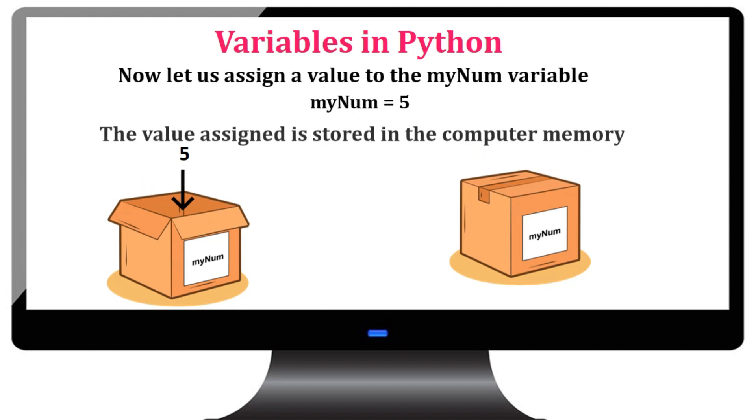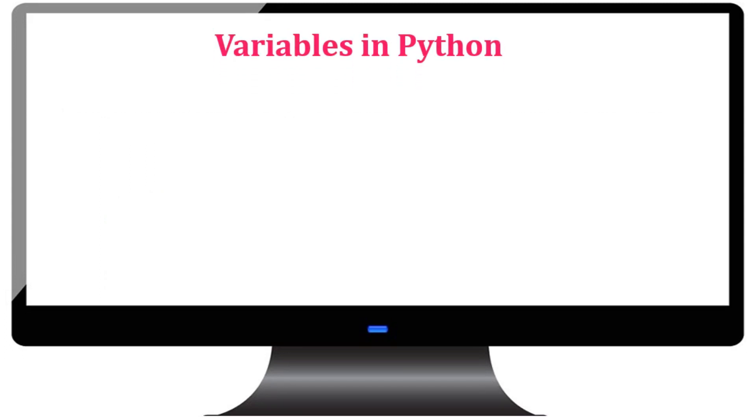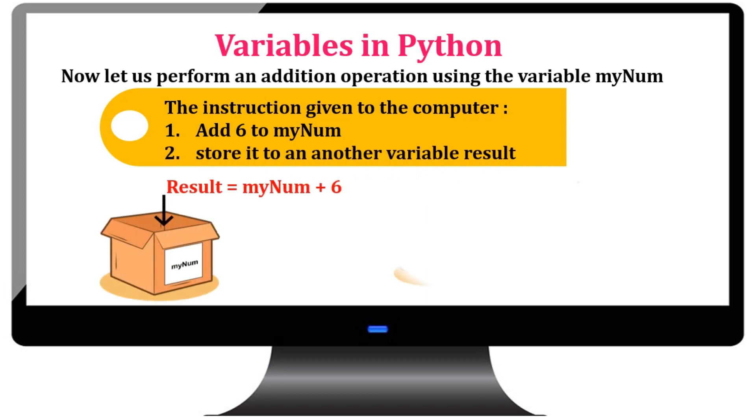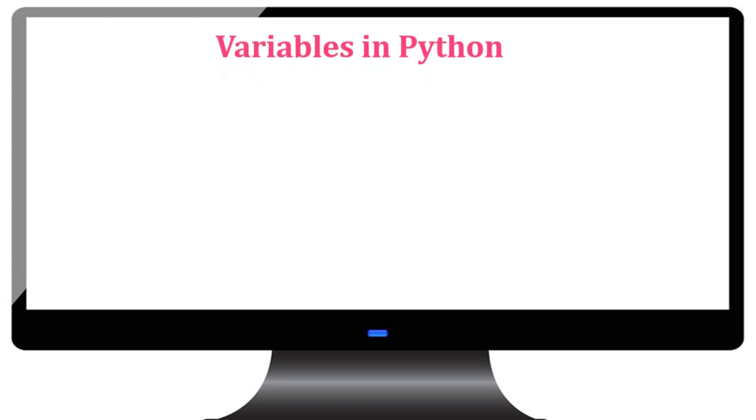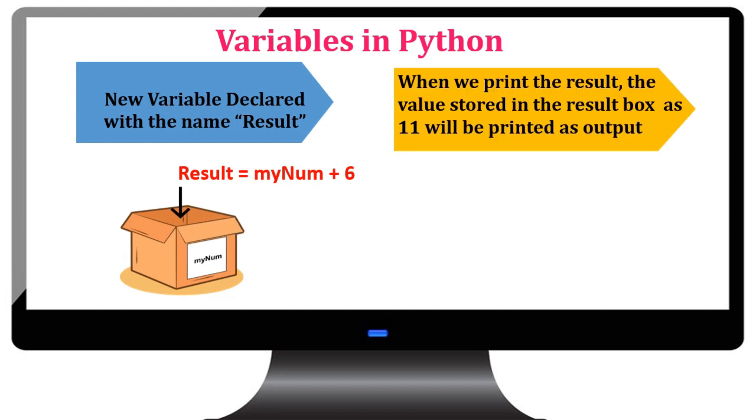The assigned value is stored in the computer memory. Now, let us perform an addition operation using the variable mynum. The instruction given to the computer is add 6 to mynum and store the result to another variable named as result. Here, a new variable named result is also created to store the result. When we print the result, the value stored in the result box will be printed as output.